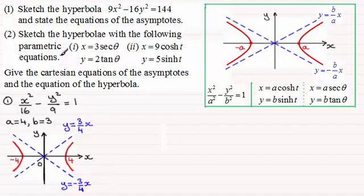Now in two we've got to sketch the hyperbola with the following parametric equations. We've got this trigonometric style parametric equation and the hyperbolic form. And then we've got to go on to give the Cartesian equations of the asymptotes and the equation of the hyperbola.